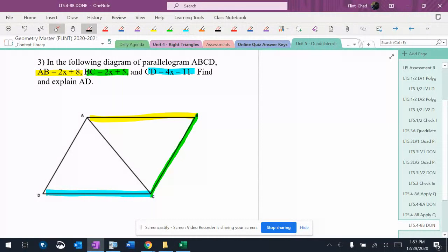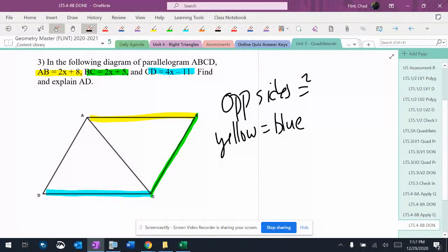It's a parallelogram. So one of the things that's true about a parallelogram is opposite sides are congruent. That means that yellow is equal to blue, which tells me that 2x plus 8 equals 4x minus 11.